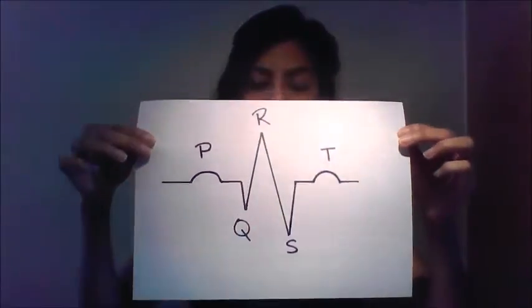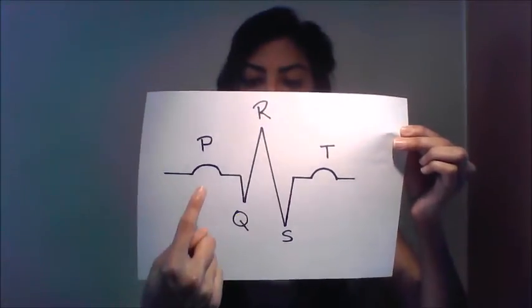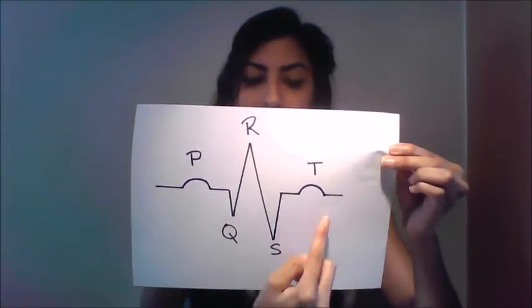Let's start off with heart attacks. There are two main types: one is called STEMI and one is called NSTEMI. Before we go any further, it's really important that we understand an ECG — an electrocardiogram — of a patient experiencing a heart attack. A normal ECG is made up of three main parts: P, the QRS complex, and T.